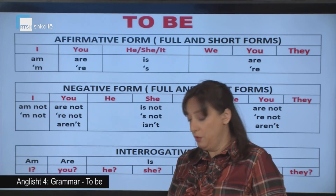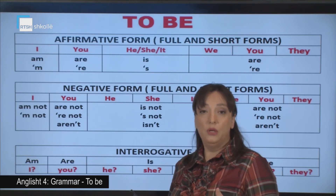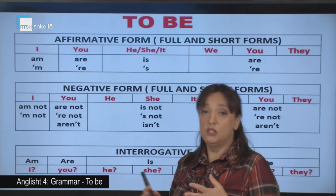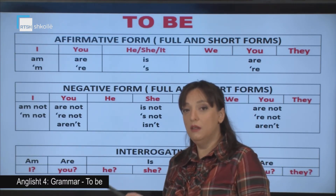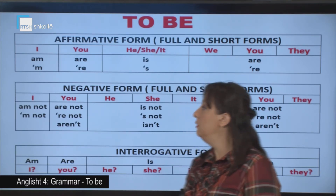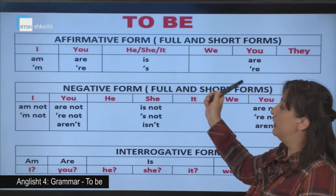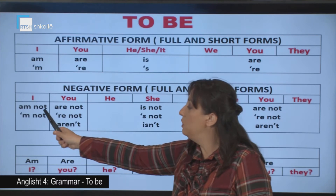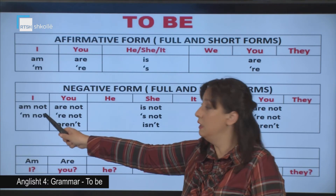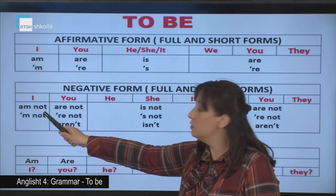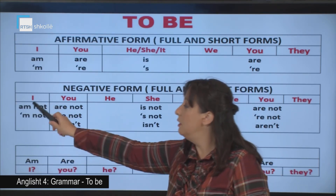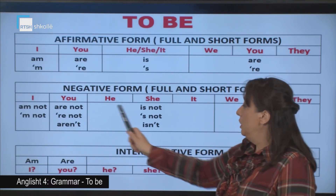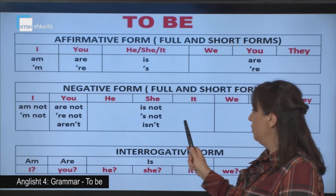But in the text, remember, we had some questions and answers — yes answers and no answers. Like every other verb, 'to be' also has its interrogative form and yes or no answers. Look at the table now. Affirmative, negative form — to form the negative form we use 'not'. 'I'm not', or the full form 'I am not'. 'You are not', 'you're not', 'you aren't'. 'He's not', 'he is not', 'he isn't' — the short form.